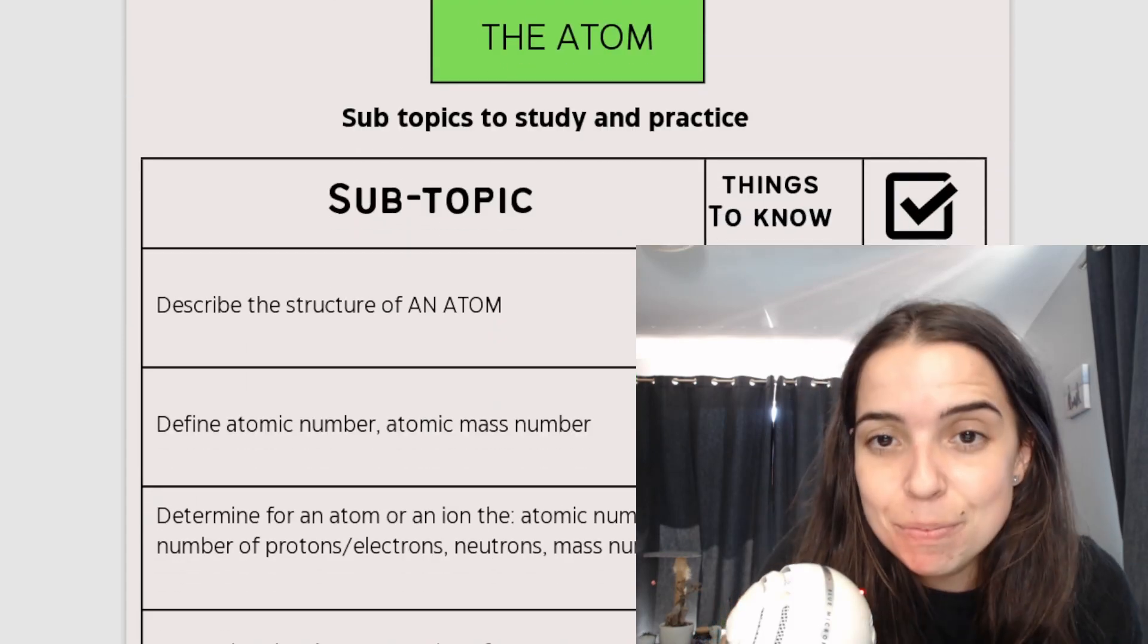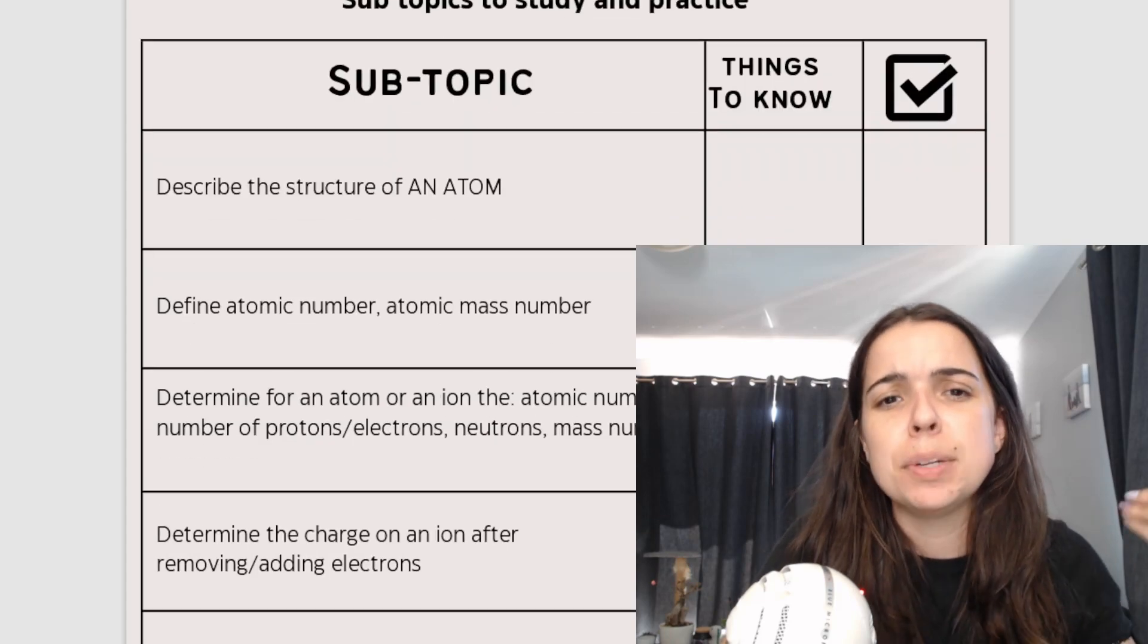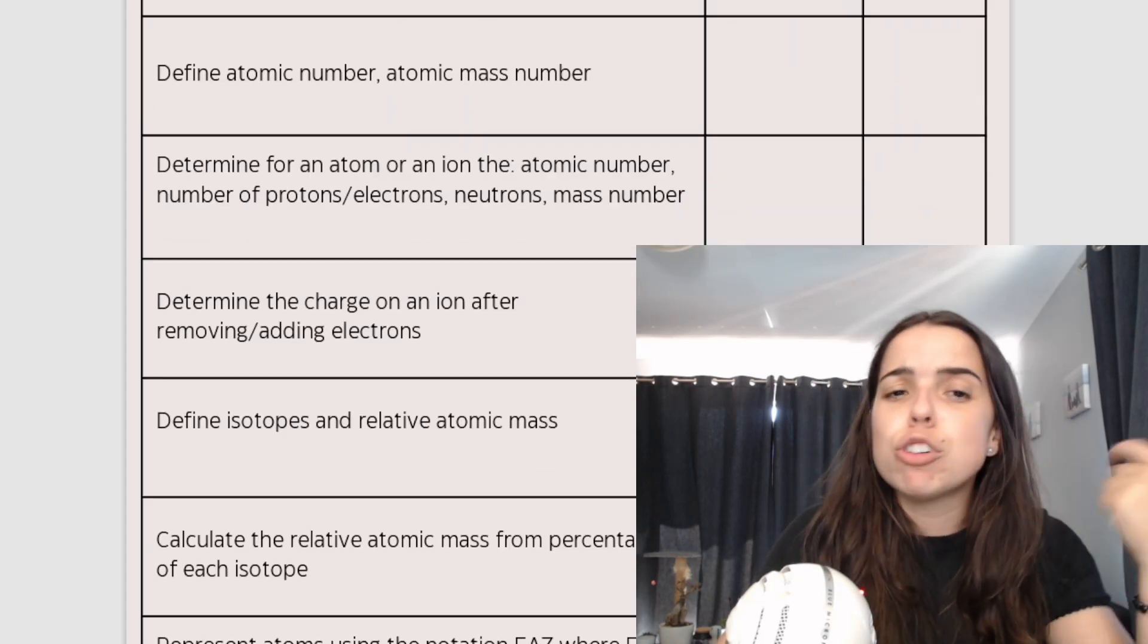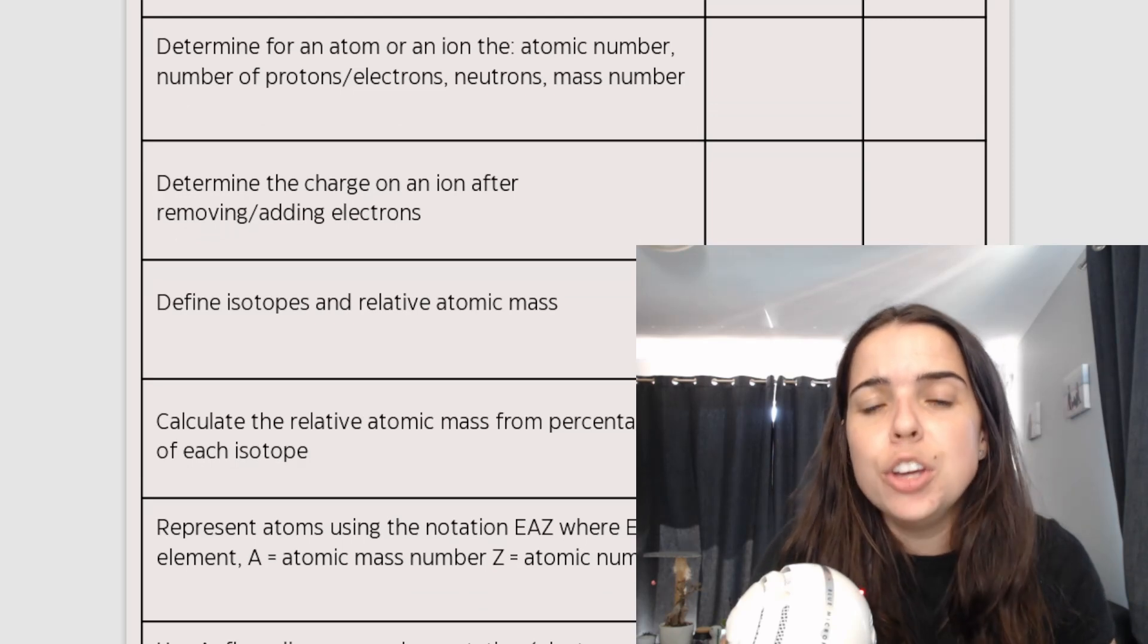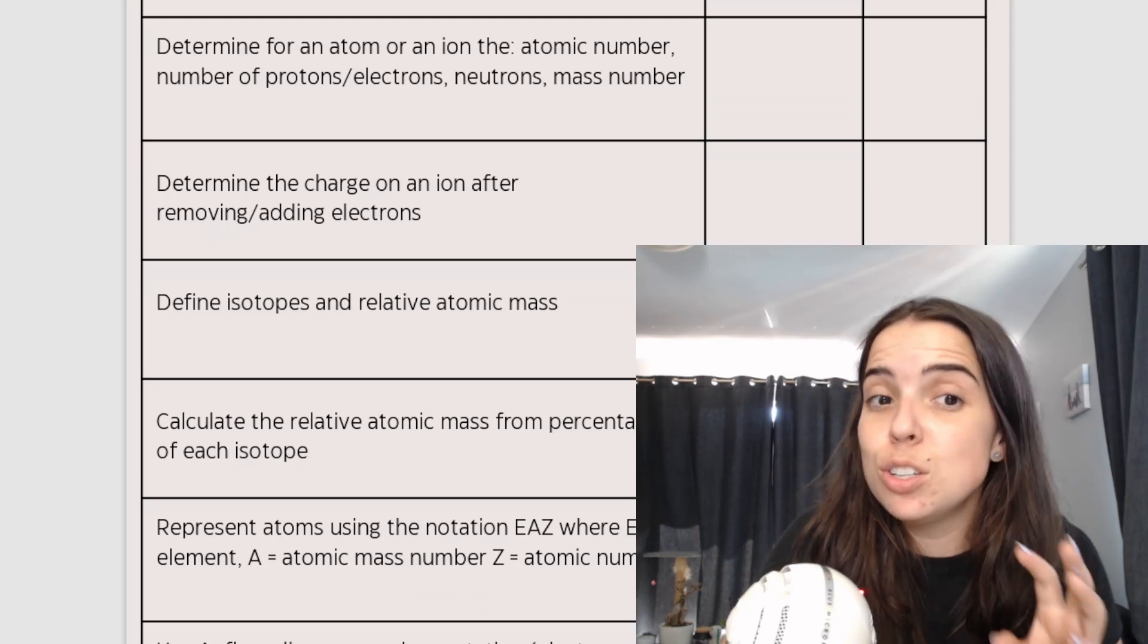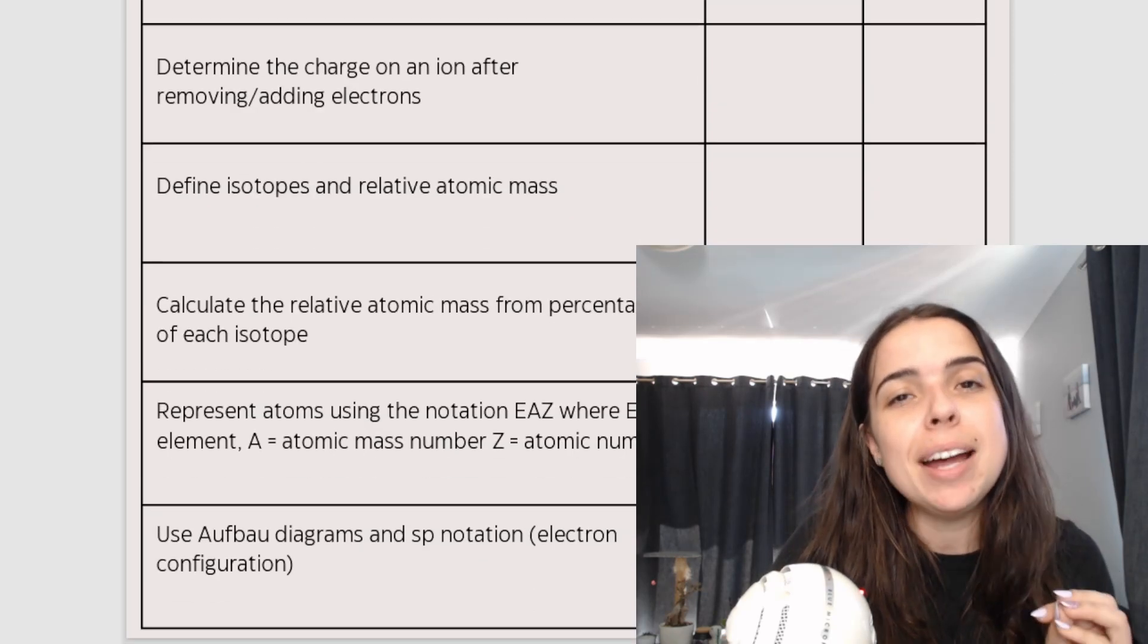Then we look at the atom. You look at the structure of an atom, atomic number, mass number, number of electrons, protons, neutrons. You learn about something called isotopes and relative atomic masses.